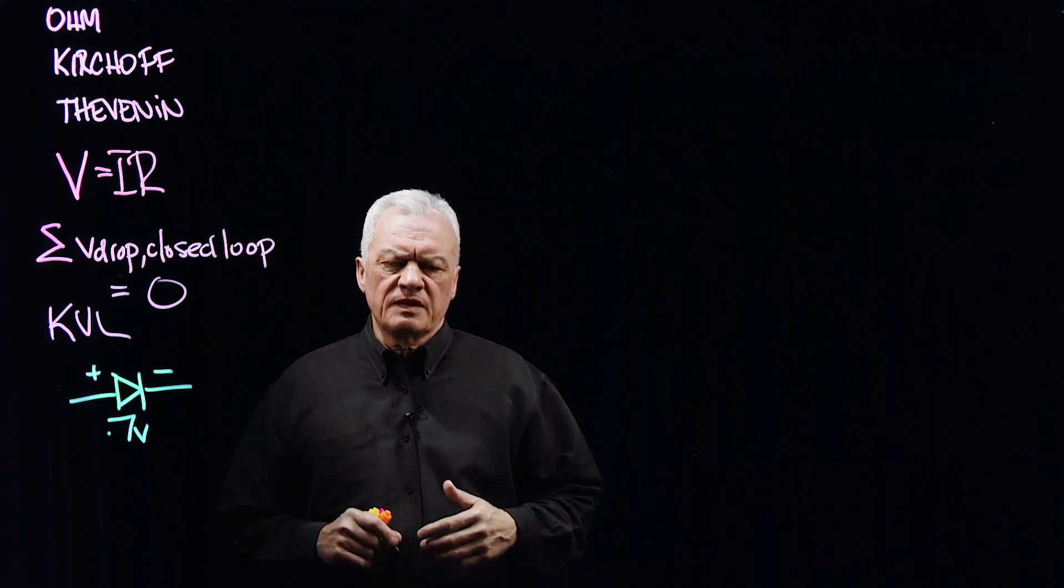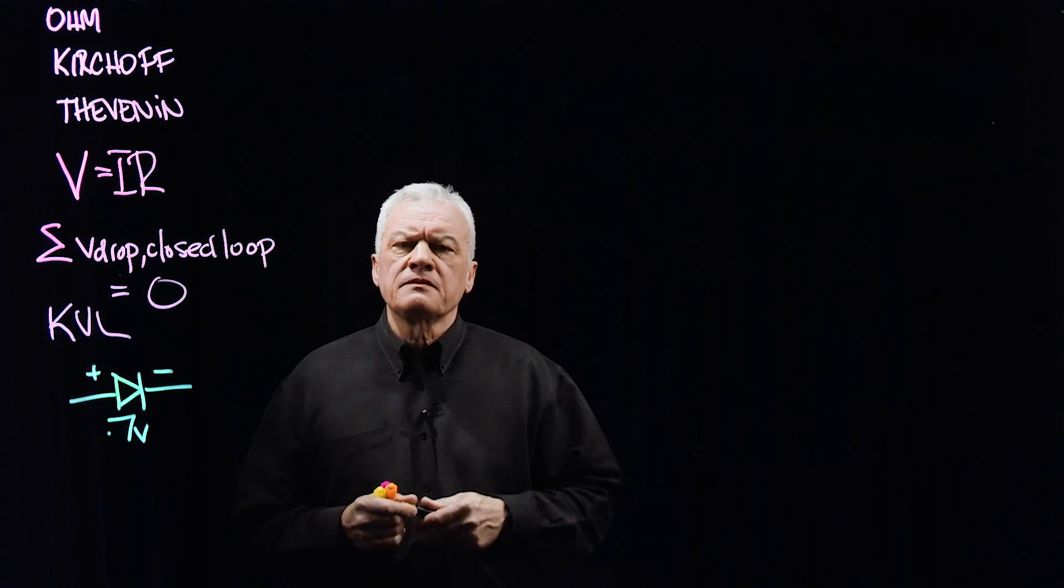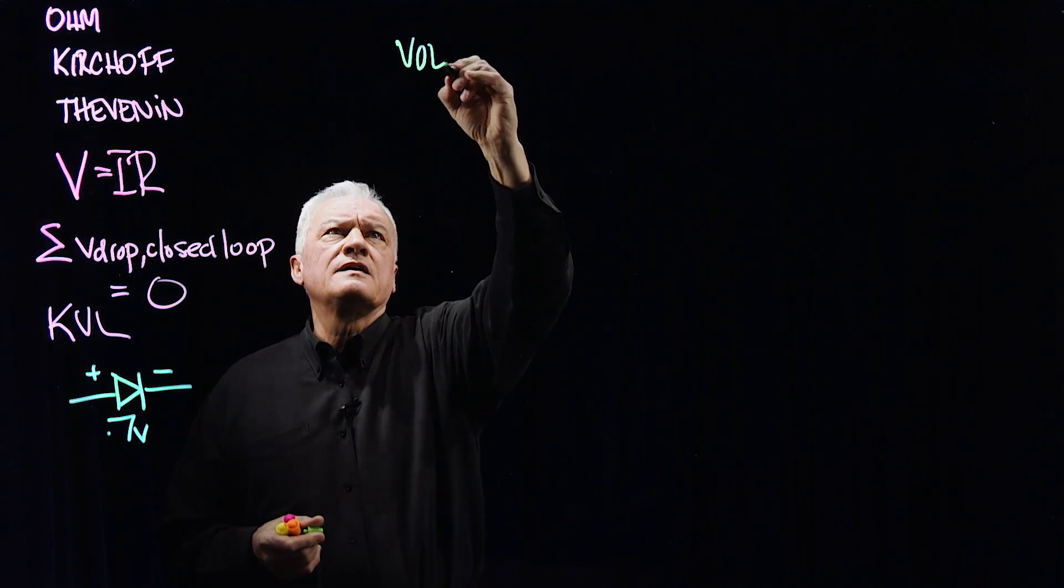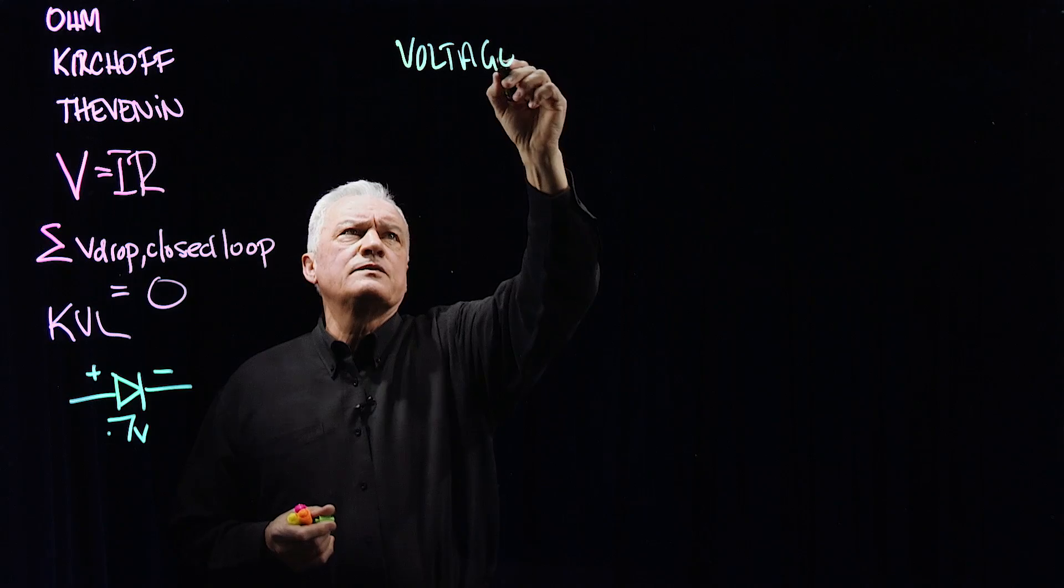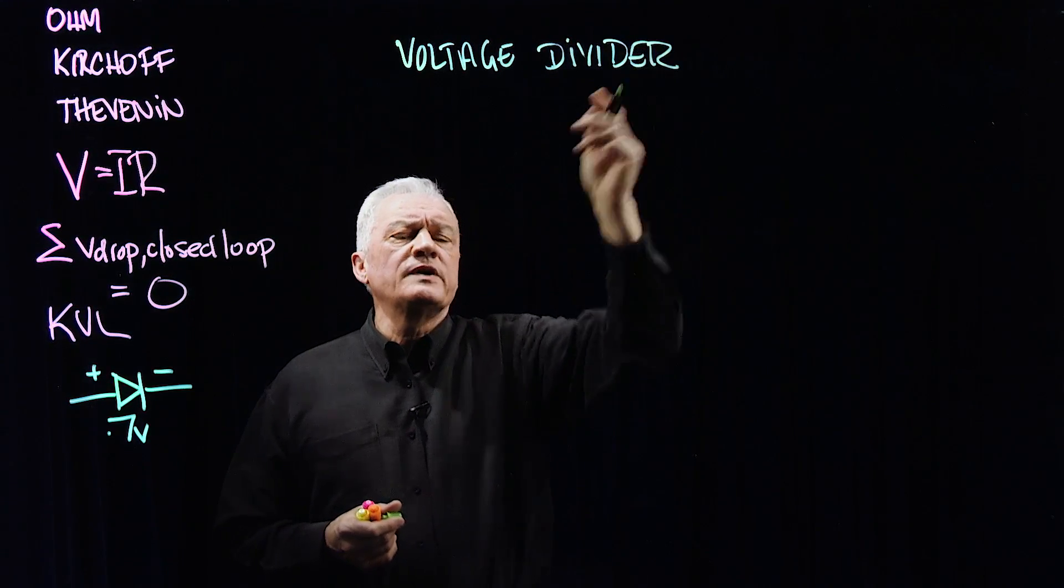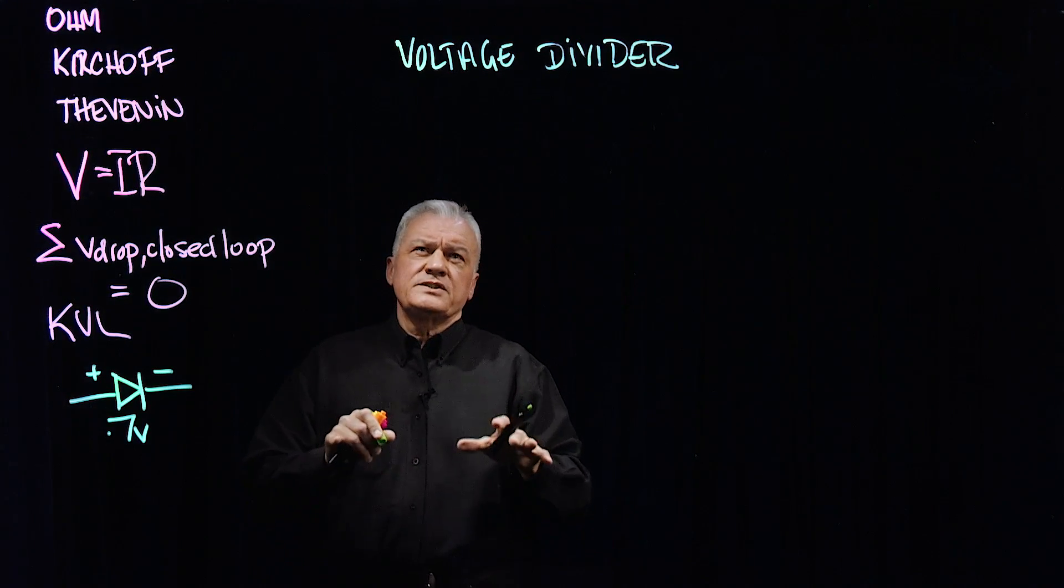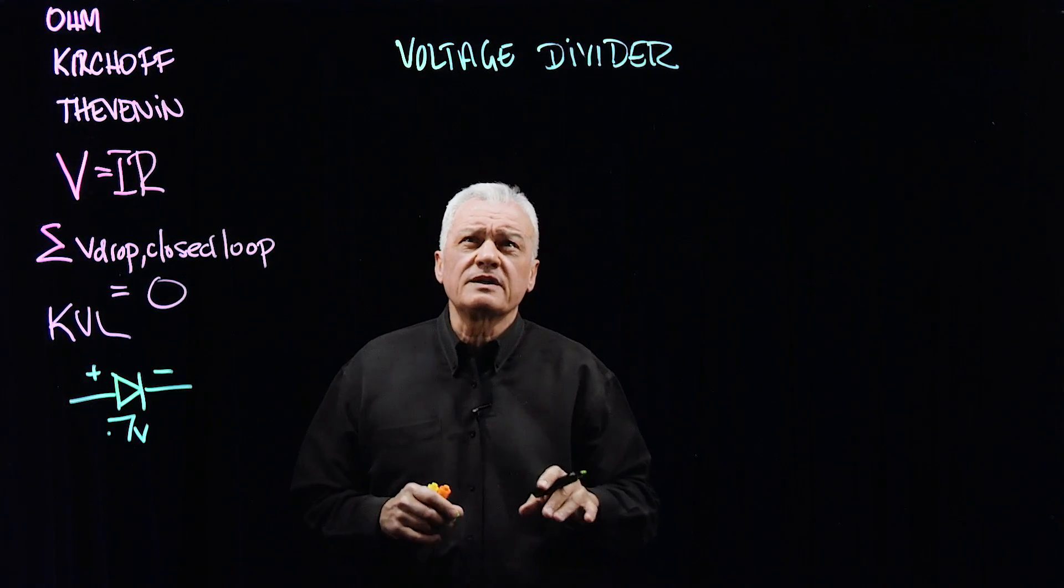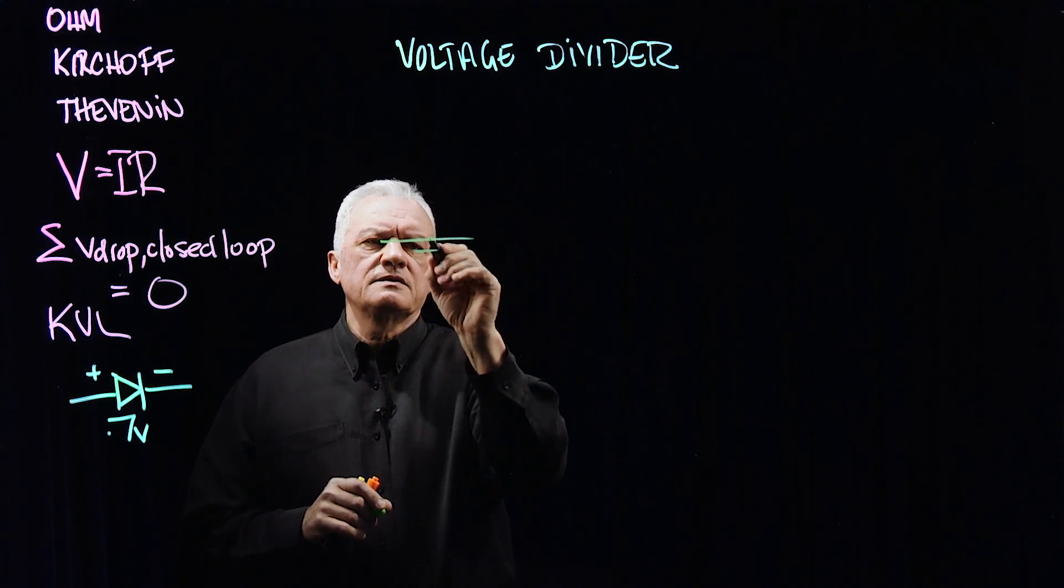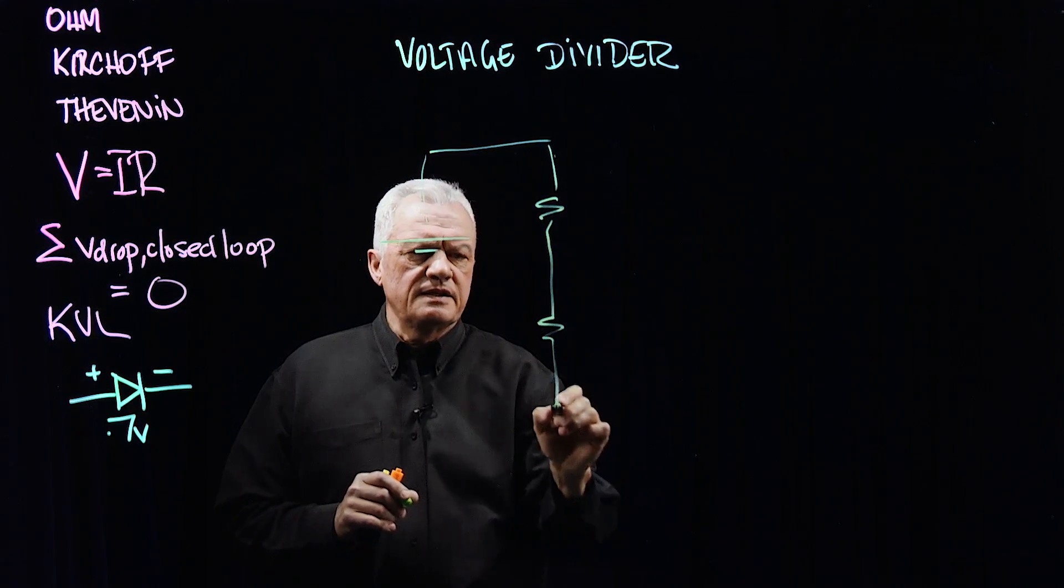Another configuration that we often run into with circuit design is we call it a voltage divider. We use the voltage divider to create a voltage at some point in a circuit so that we can establish a bias point, an operating point, around which the rest of the circuit works. Let's go back to our battery design here again, and a voltage divider looks like this.